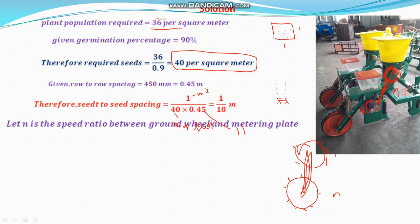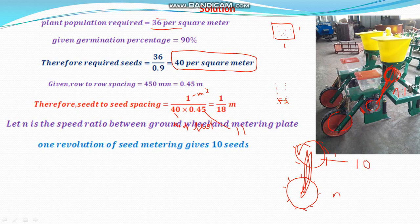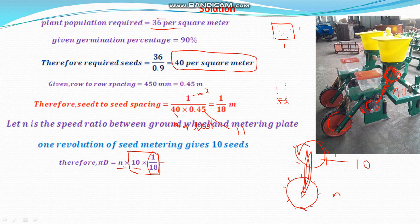If the ground wheel rotates once, the metering plate rotates n times, and one revolution gives 10 seeds. So 10 seeds have a spacing of 1 by 18 — that is the seed spacing. How much distance should it cover? That will be equal to n into 10 into the seed spacing. These are the total distance the ground wheel has to cover for one revolution of the ground wheel.